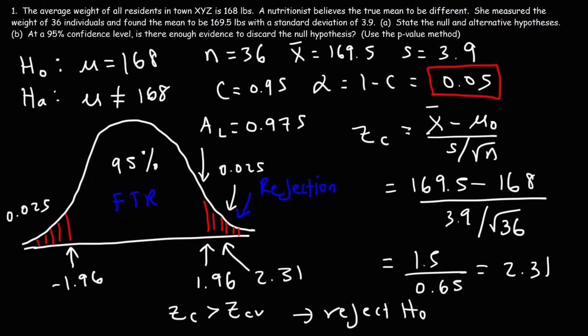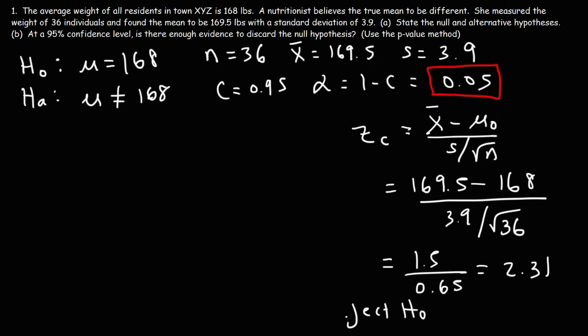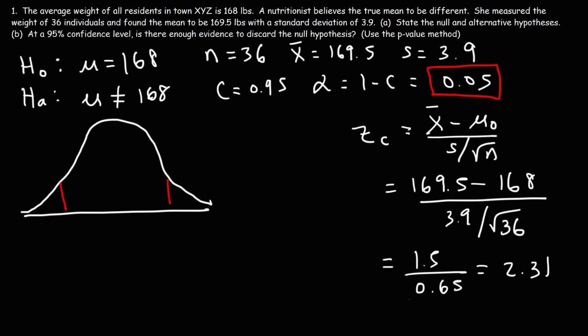Now let's apply the p-value method. We still have a two-tailed test, and we place our calculated z-value of 2.31 on the normal distribution. We need to determine the area of the shaded region — the combined left and right tail areas — which will be our p-value. We'll then compare it to alpha to decide whether to reject the null hypothesis.